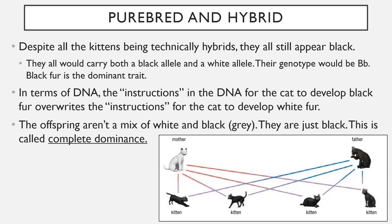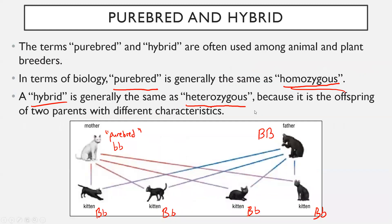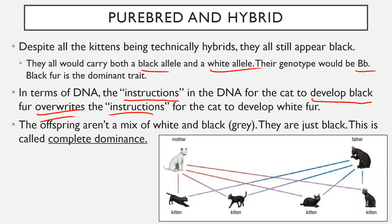Despite all the kittens being technically hybrids, they still all appear black. They all carry both a black allele and a white allele; their genotype is capital B, lowercase b. Black fur is the dominant trait — the DNA instructions for developing black fur overwrite the instructions for developing white fur. Even though they all have a white hair allele, the dominant one completely nullifies it, as if the white allele wasn't even there. This is called complete dominance, where a trait is totally dominant and completely overwrites everything else.